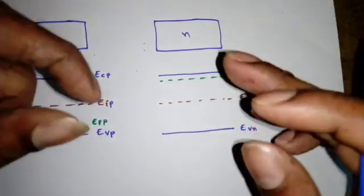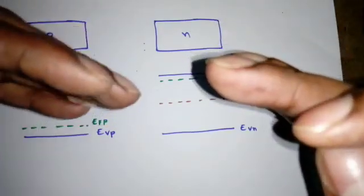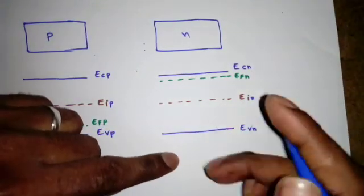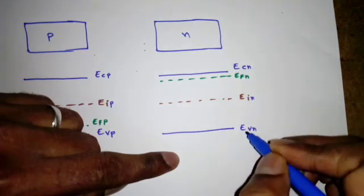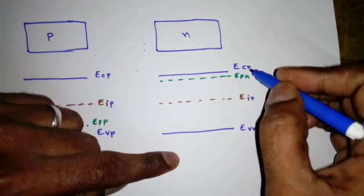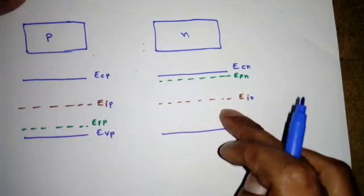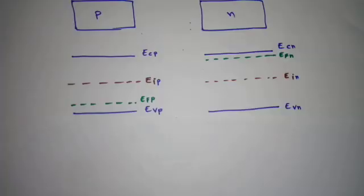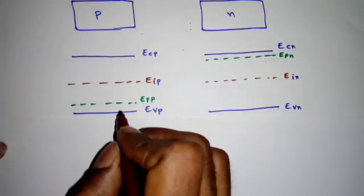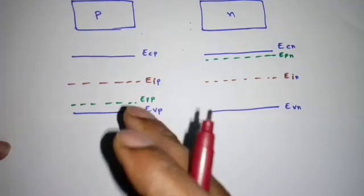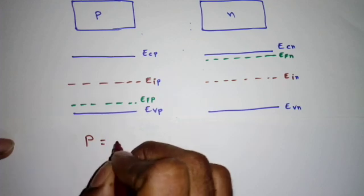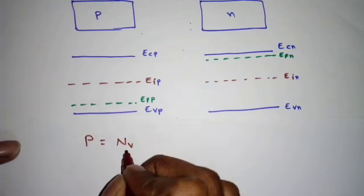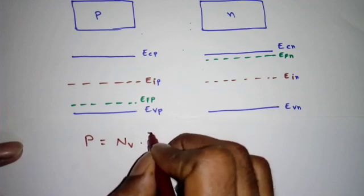For an n-type semiconductor, electrons are the majority carriers, so the Fermi level Efn moves closer to the conduction band Ecn. We label the levels as Ecn, Efn, Ein, and Evn. To find the number of holes in p-type, we use the energy gap between Efp and Evp: hole concentration p = Nv × e^(-(Efp - Evp)/kT).